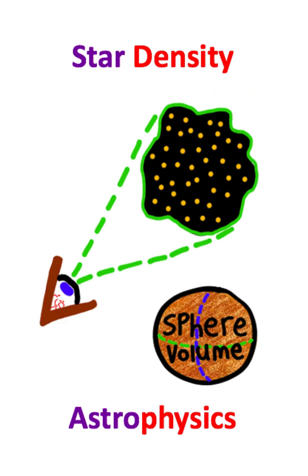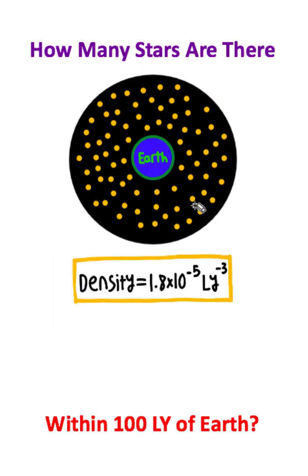We are going to use the concept of stellar density to calculate the number of stars within a hundred light years of Earth.